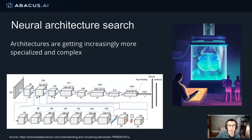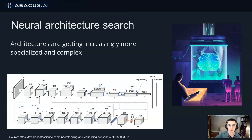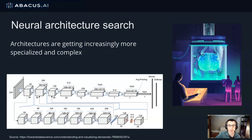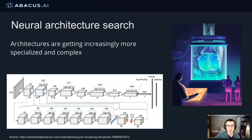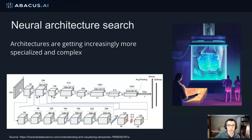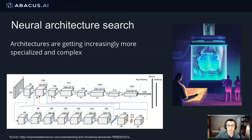Neural architectures are getting increasingly more specialized and complex. This image on the bottom is the DenseNet architecture, which was designed in 2016 for ImageNet. And recently, the best architectures are not handmade, but are designed with the help of algorithms. This is the area of Neural Architecture Search, or NAS, which seeks to automate the process of finding the best architecture for a given dataset.